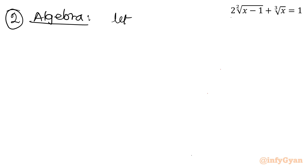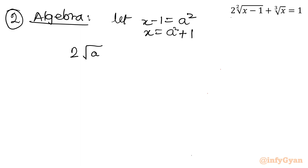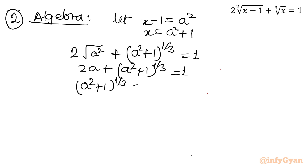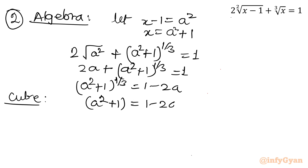I am going to give a substitution. Let x − 1 = a², which means x = a² + 1. So the equation becomes 2a + (a² + 1)^(1/3) = 1, which gives (a² + 1)^(1/3) = 1 − 2a. Now cube both sides: a² + 1 = (1 − 2a)³. The 1/3 power is cancelled out.